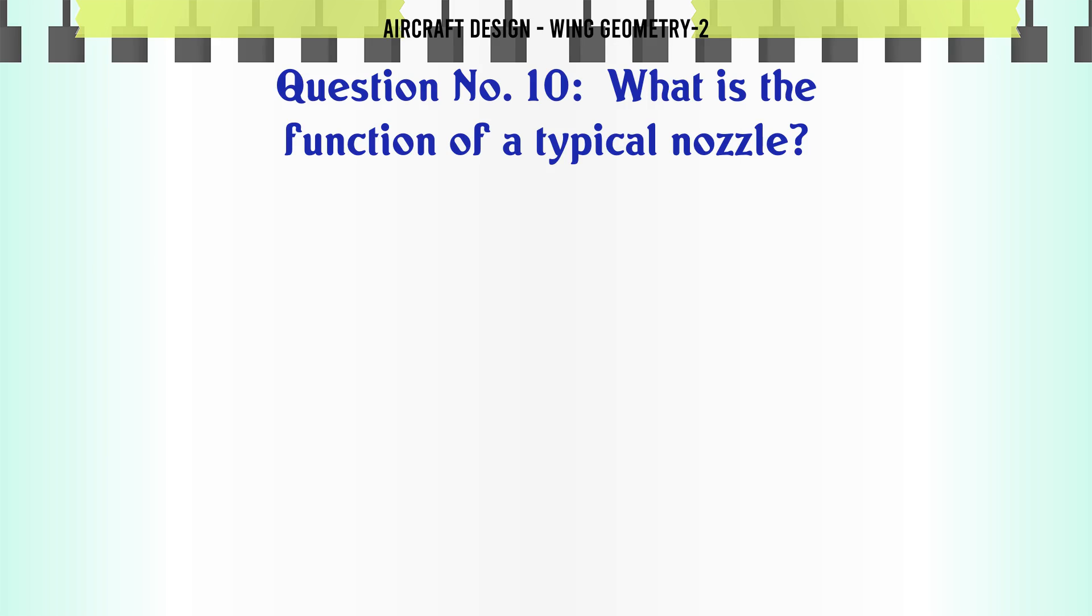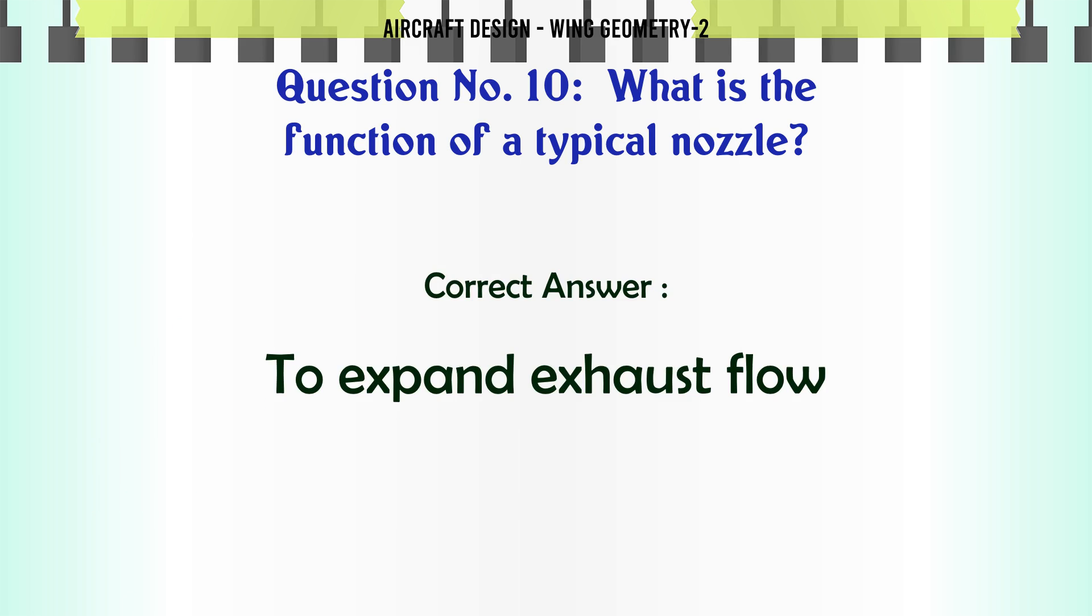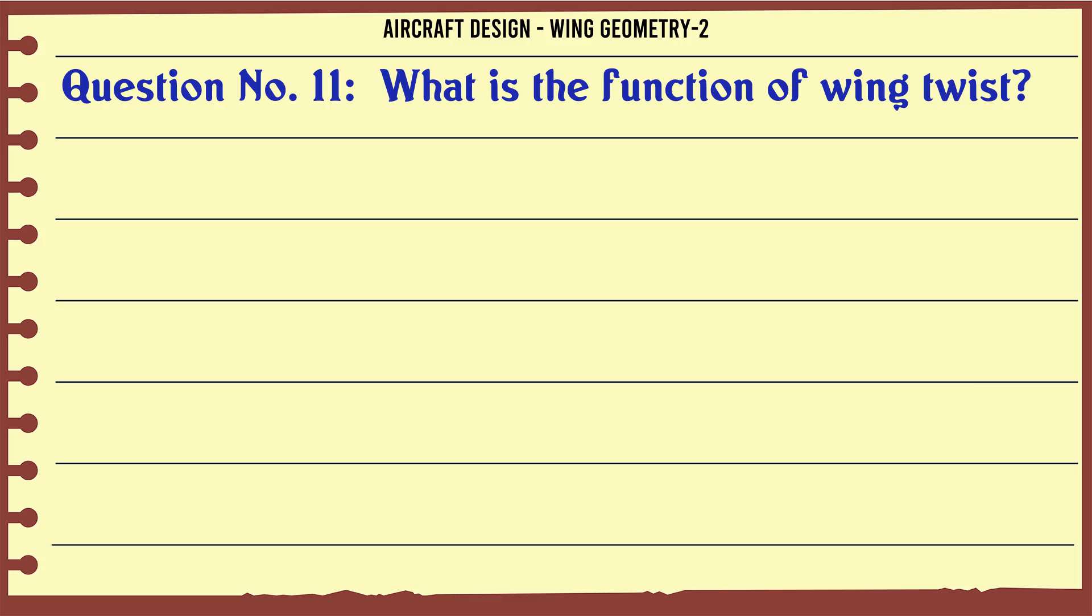What is the function of a typical nozzle? A: To expand exhaust flow, B: To reduce flow velocity, C: To generate lift to fly, D: To increase pressure. The correct answer is to expand exhaust flow.